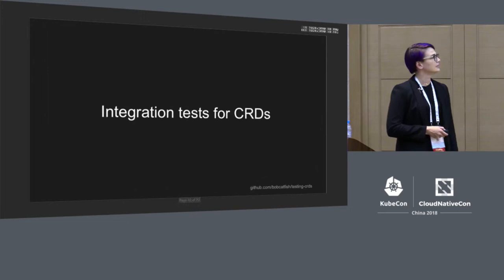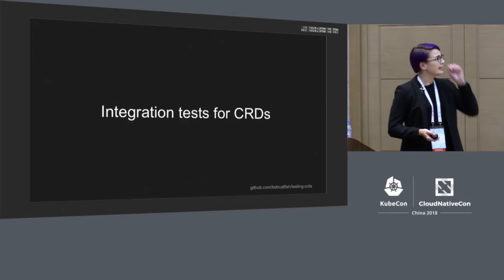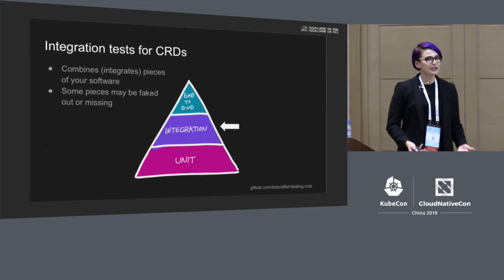Let's say we've written our system tests — where do we go from here? As we move down the pyramid, we get to integration tests. It's really hard to define integration tests, but it's fair to say they're somewhere between end-to-end tests and unit tests. They're not unit tests because they put pieces of the system together, and they aren't end-to-end tests because they don't use the whole system. How we write integration tests for our CRDs depends on how we built our controllers, and each approach has different strengths.